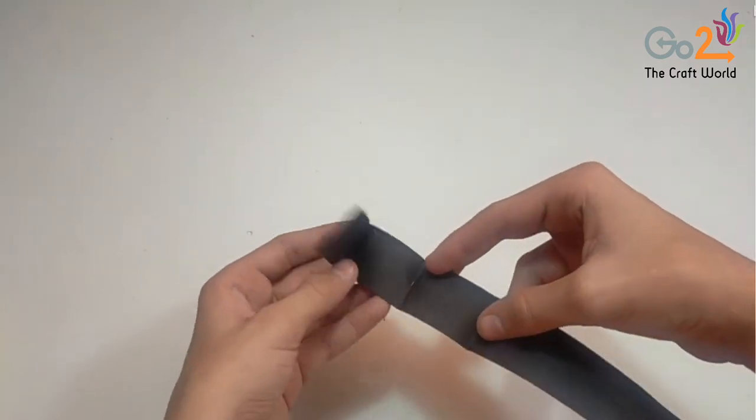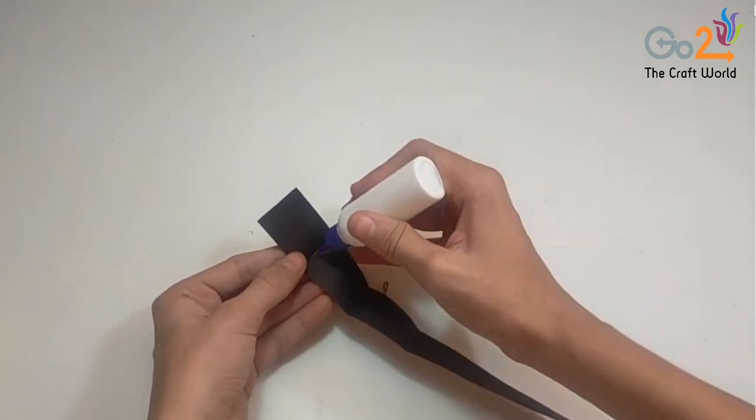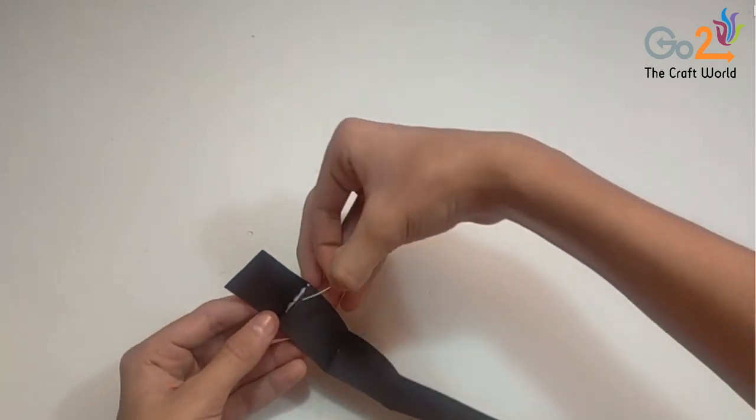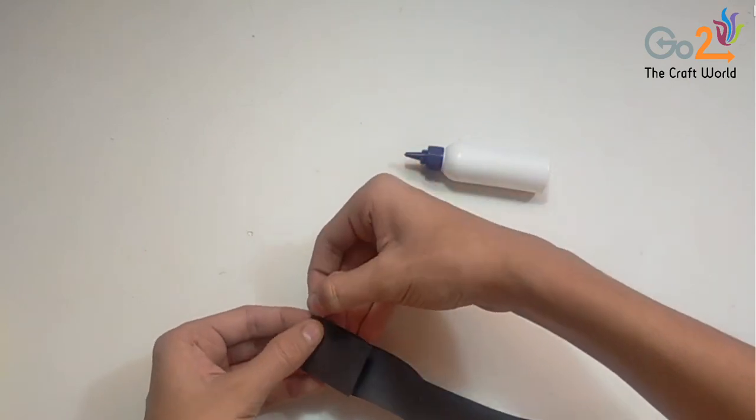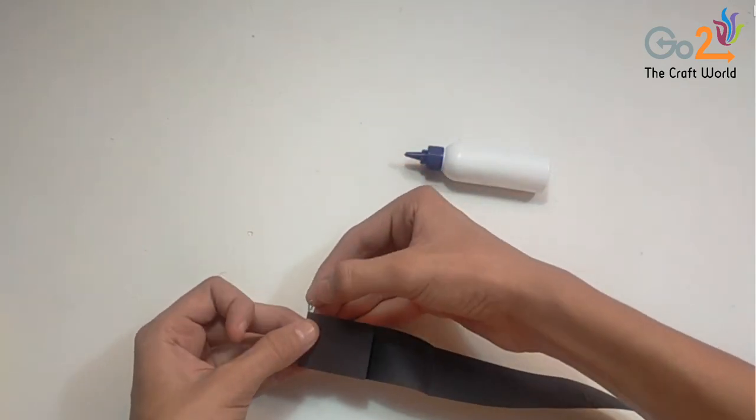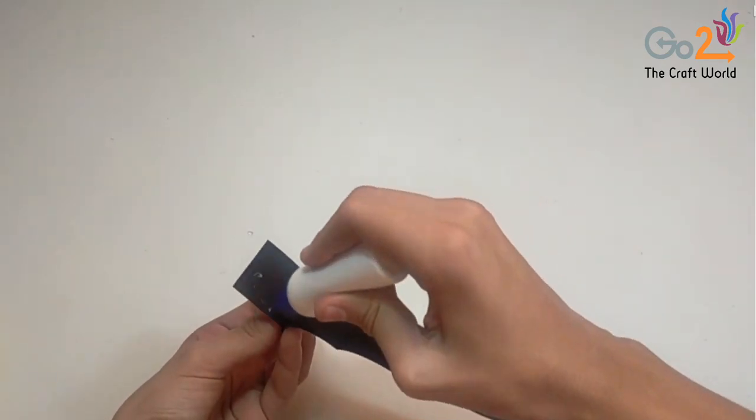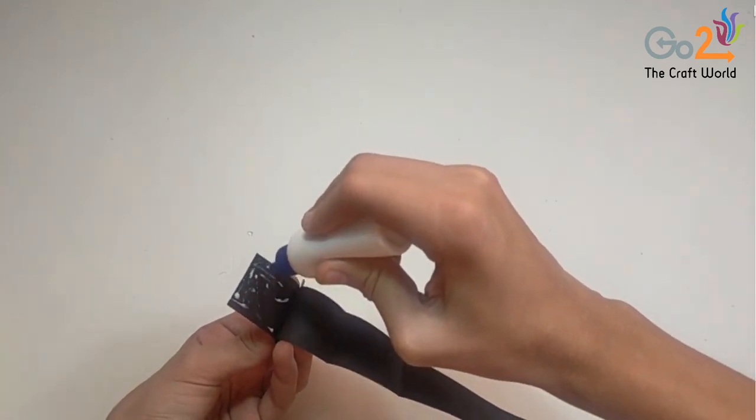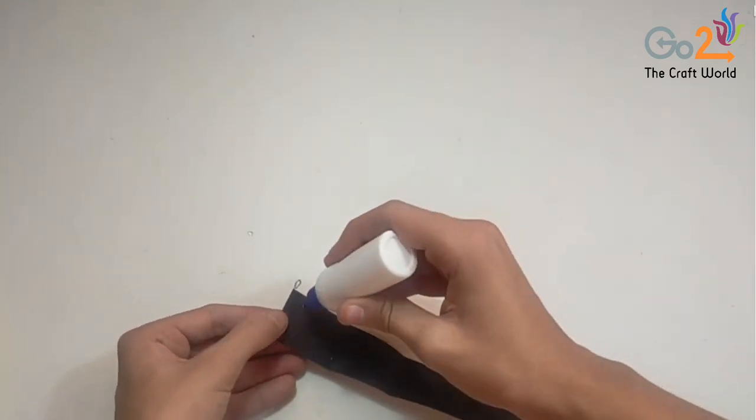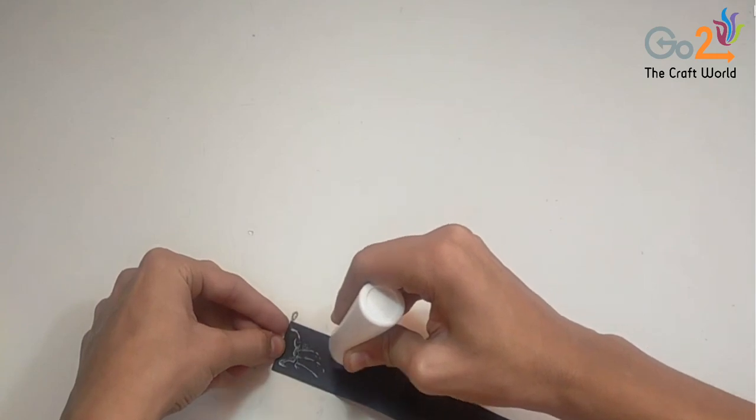Now we will unfold it and we will stick the flexible wire like this to make the keychain loop. Now we will start gluing and sticking the strips.